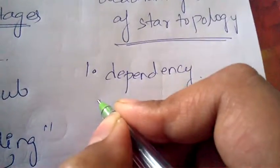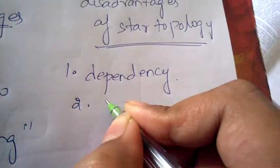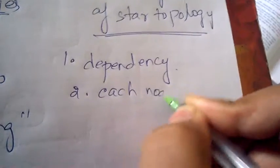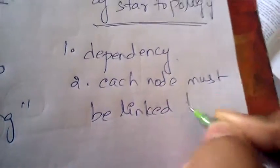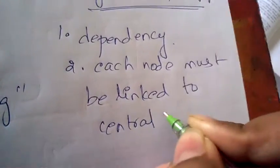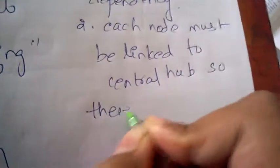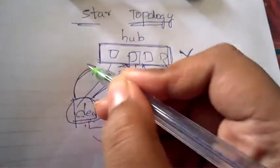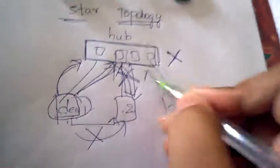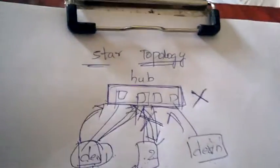The second disadvantage is traffic. Since each node must be linked to the central hub, all devices send their information to the hub at the same time, which may cause traffic congestion at the hub. These are the disadvantages and advantages of star topology. That's it for today, thank you so much for watching.